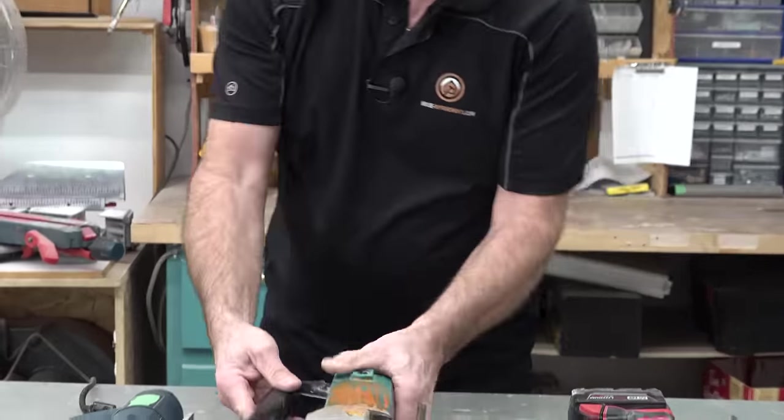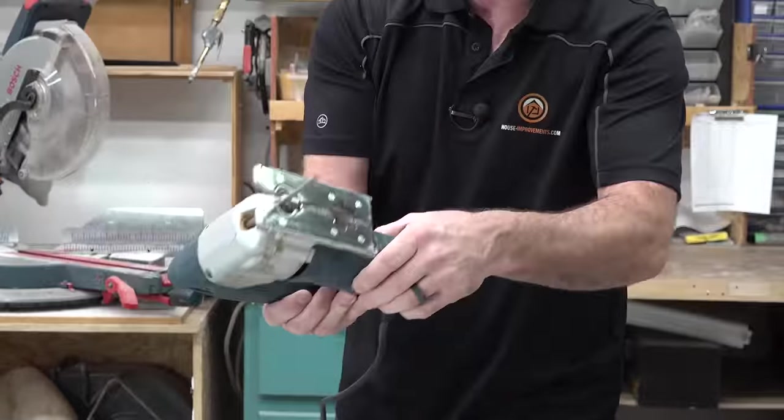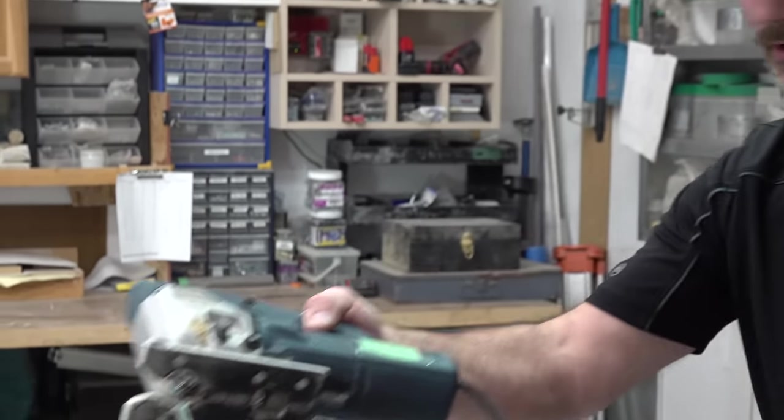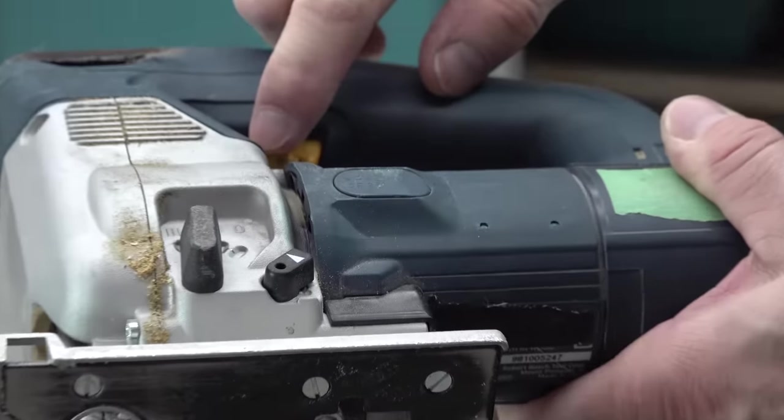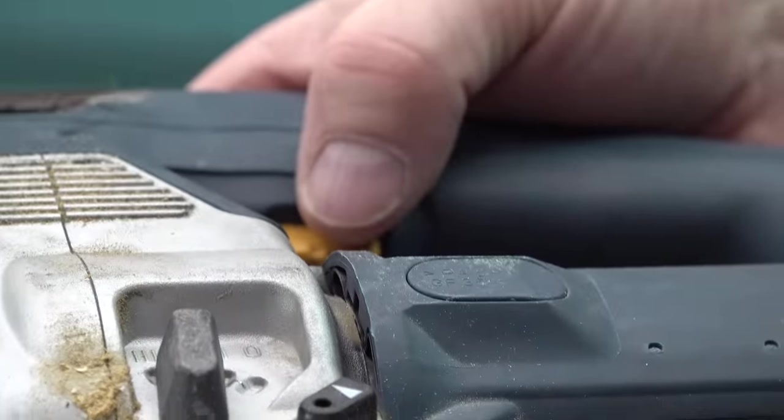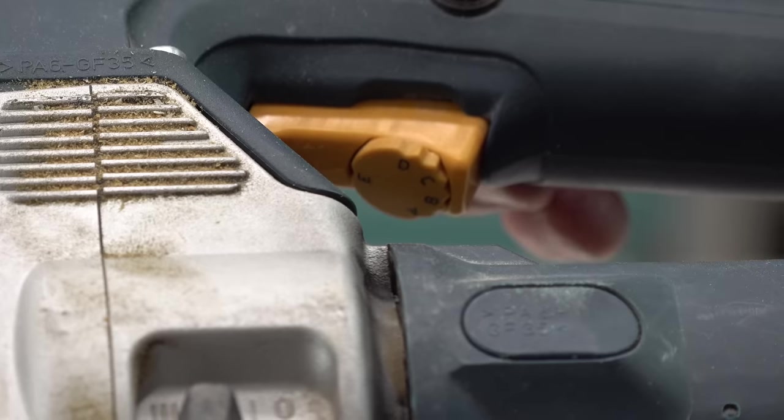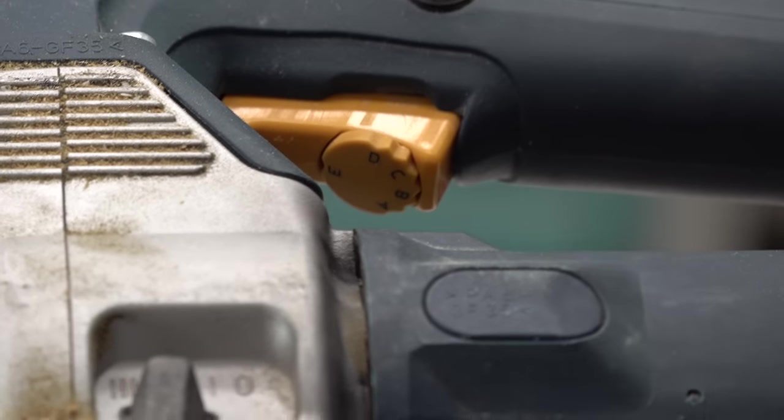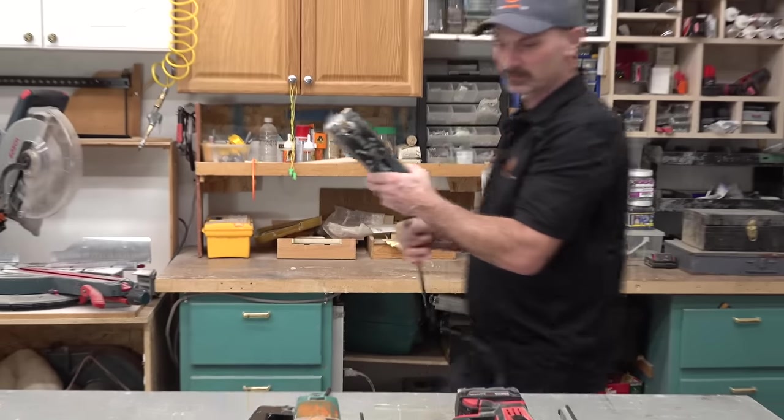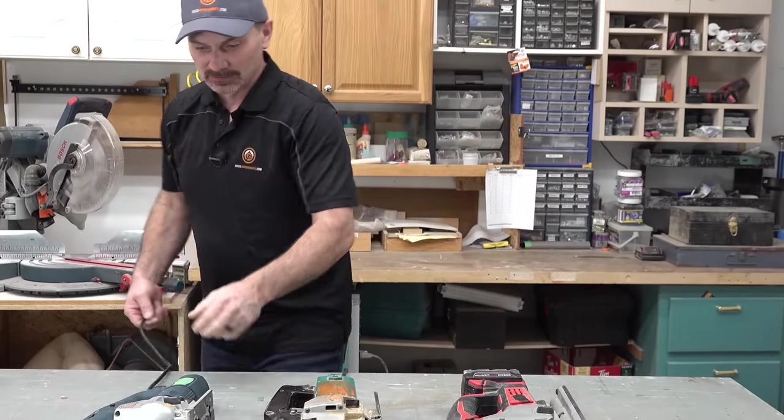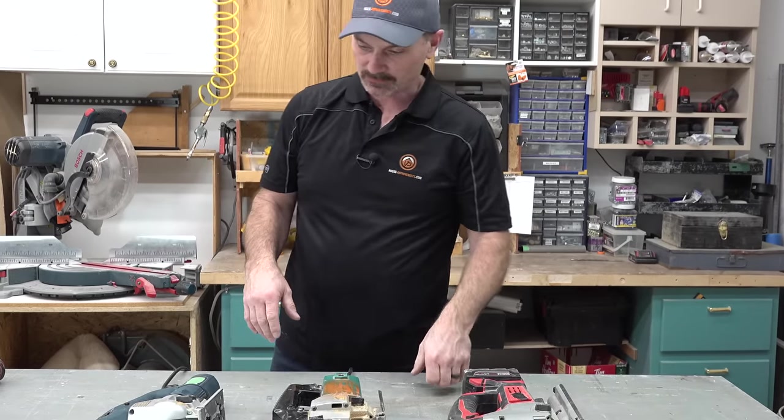Some of the jigsaws will have some speed settings. I don't know if you can see this little dial on the trigger. It has a little dial here and you can adjust the actual speed. I don't honestly know how often you'll ever use that because I never do. But anyway, some of them have it.